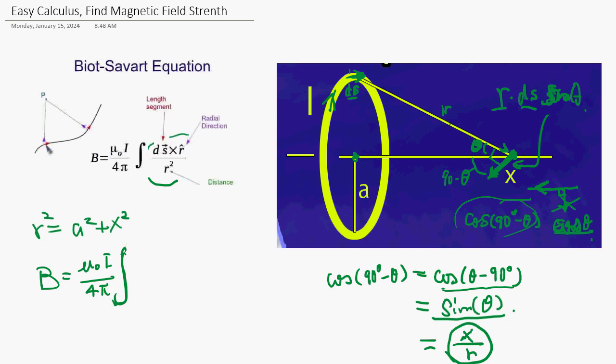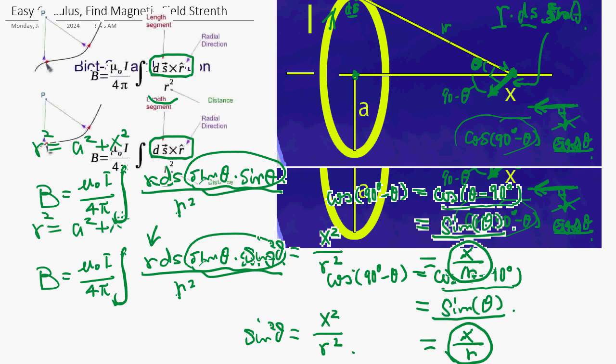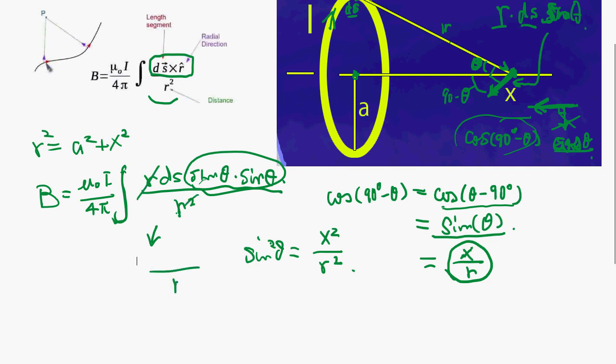This will be ds·sine θ, and the component is this component divided by r². So sine² is x²/r². So this portion is simplified to x²·ds/r³. And x and r are independent from ds, so if we take the integral.